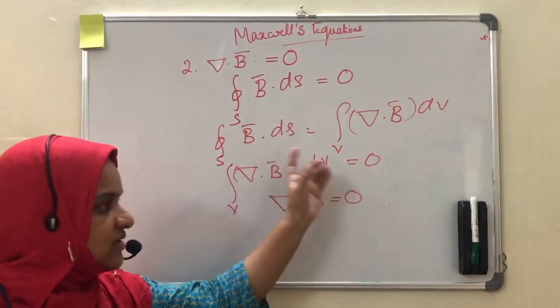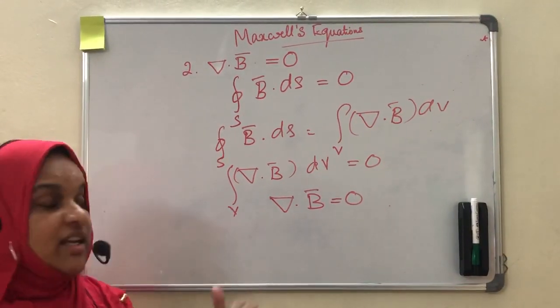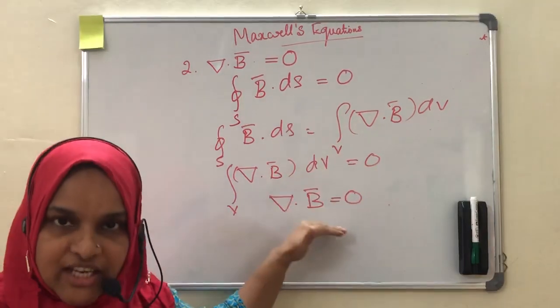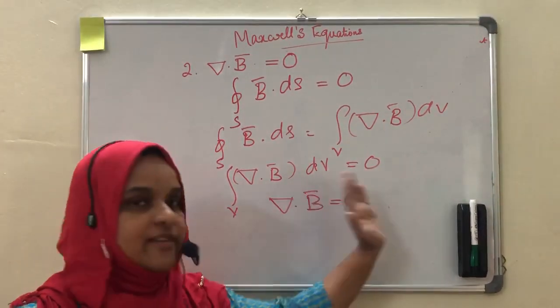From this we can see that divergence of magnetic flux density is 0. This means that the number of magnetic lines of force entering any surface will be equal to the number of magnetic lines of force leaving the surface.